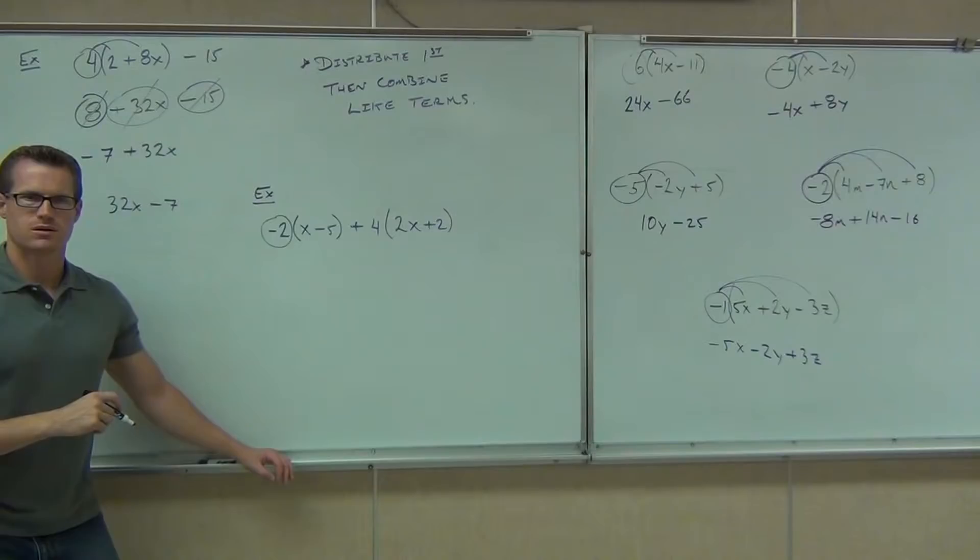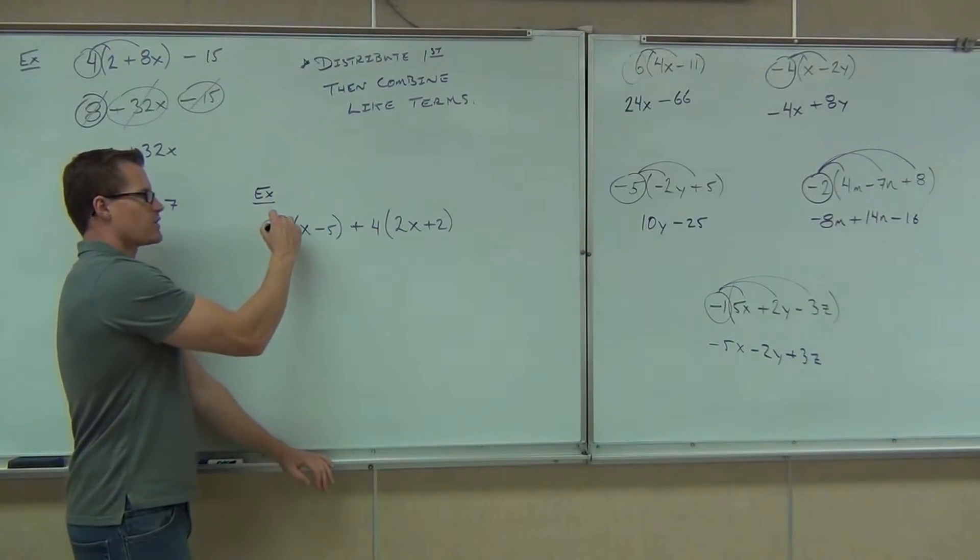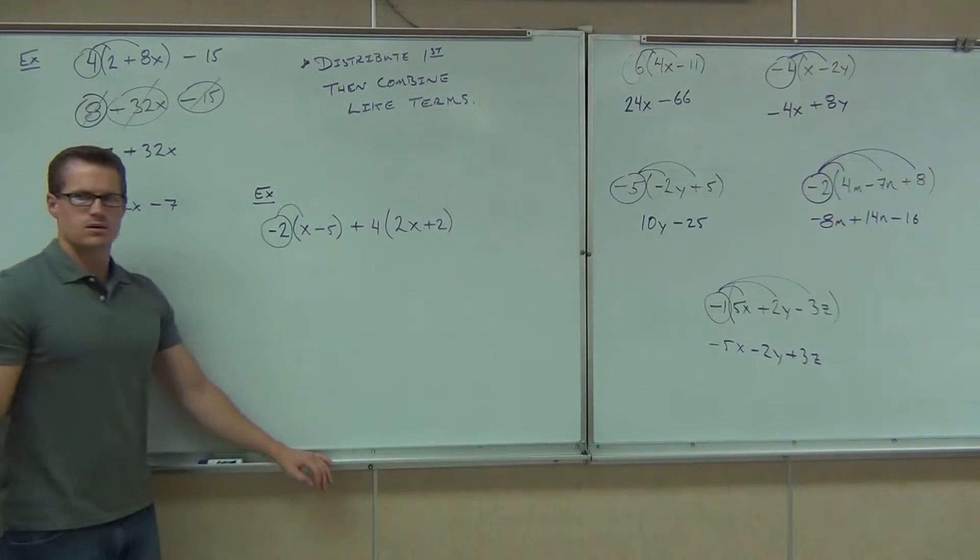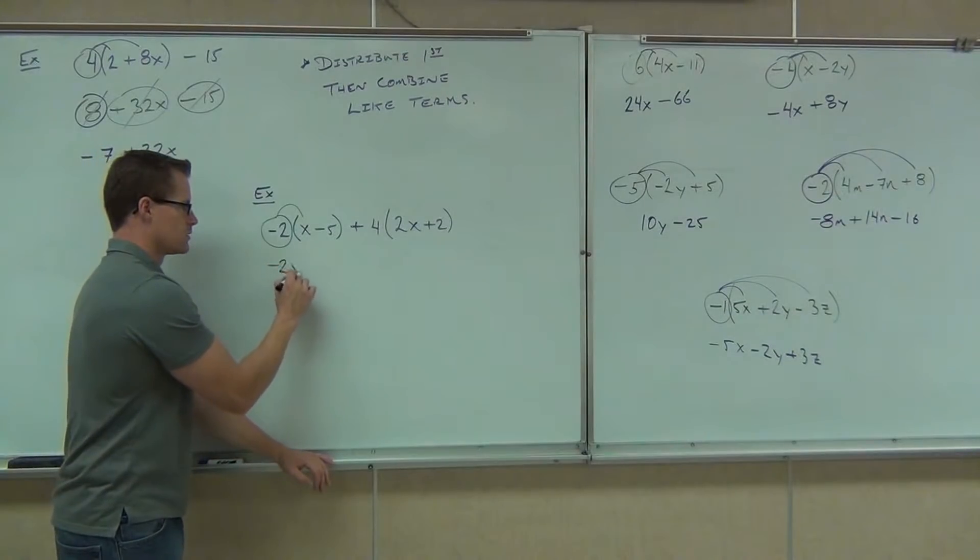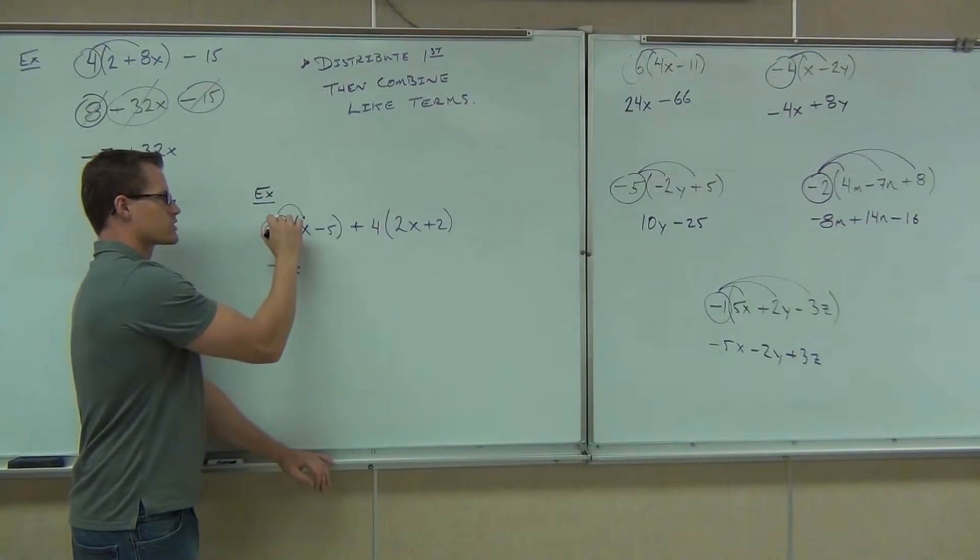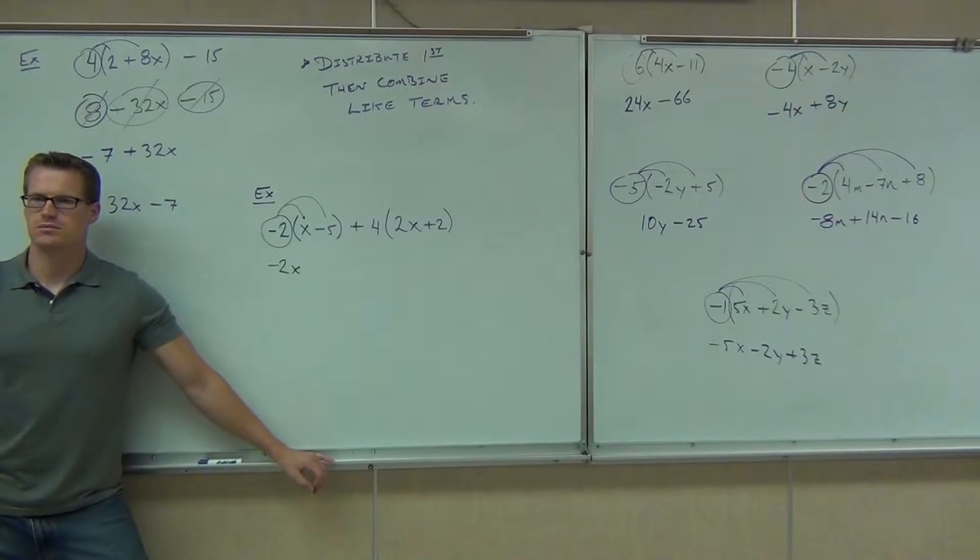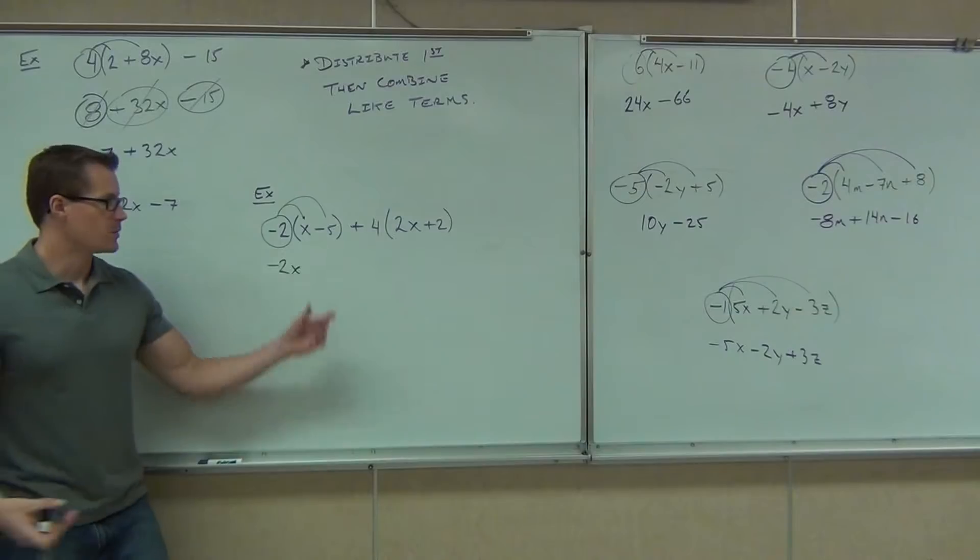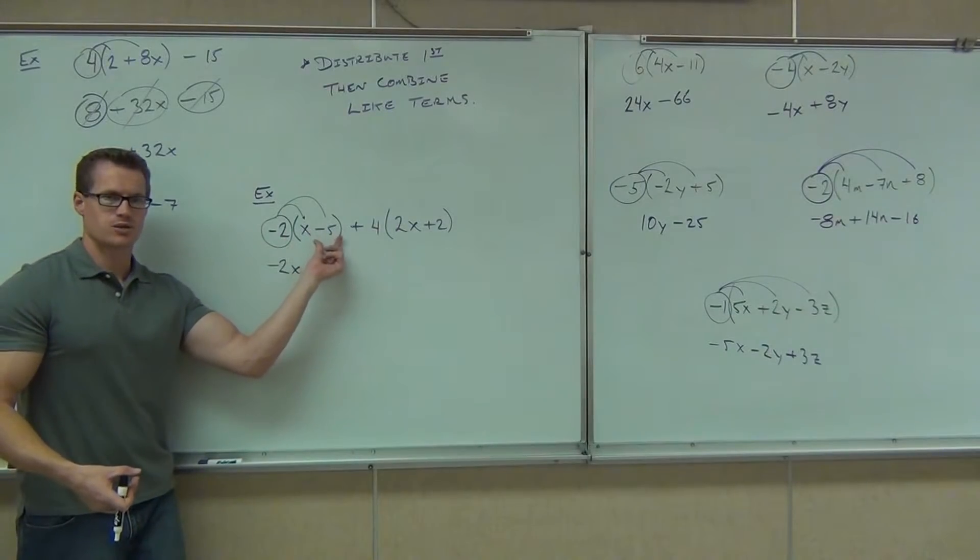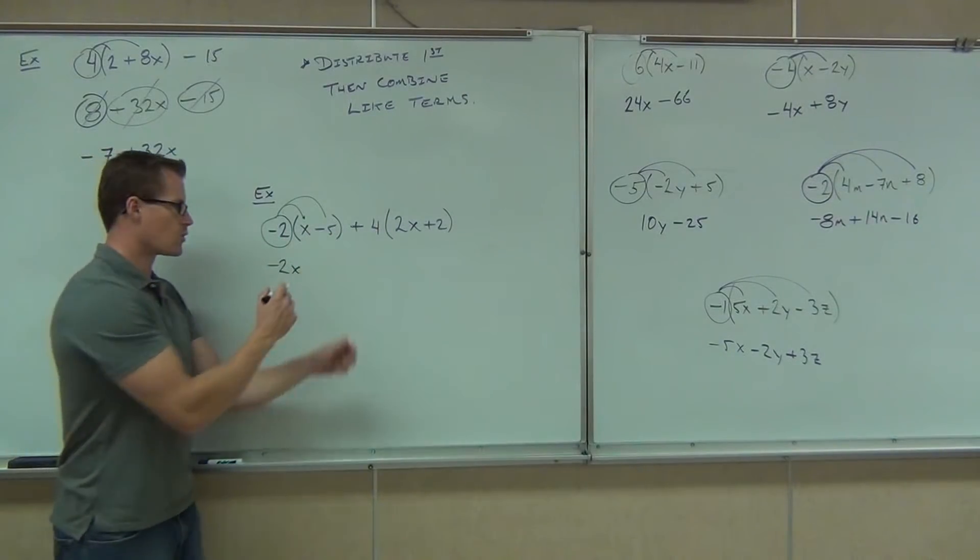So far, so good? We're ignoring this whole part. What's my first term going to be? Negative 2x. Perfect. What's my next term going to be? Positive 10. I've heard a couple different answers. Why plus 10? Why plus? Yeah, we're treating the signs with the numbers. So negative 2, negative 5. We're treating like a negative 5. You're going to get the positive or plus 10.